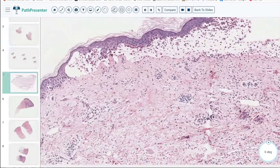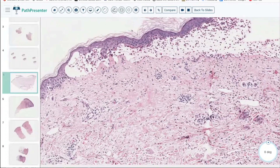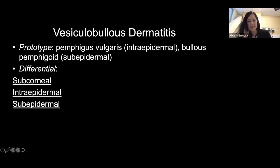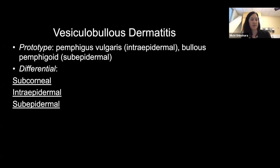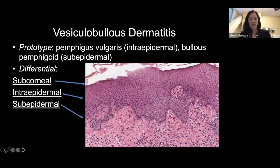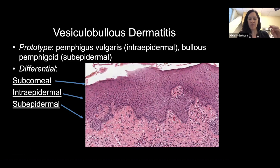We're in the vesiculobullous or blistering family. The prototype actually depends on where you are in the epidermis — the level of the split. That one was a sub-epidermal split. The prototype for that is bullous pemphigoid. Bullous pemphigoid and pemphigus are super confusing to everybody, even early dermatology residents, but very different clinically. We can talk about a differential based on where the split is in the skin: sub-corneal, intraepidermal, or sub-epidermal. Deciding that is pretty important.